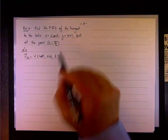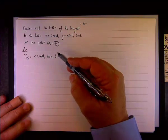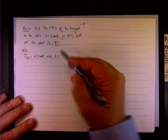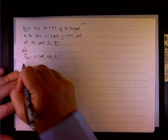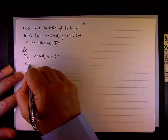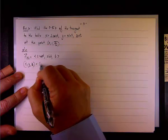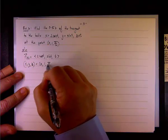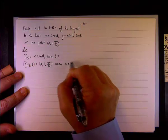We want to find a value of t when the point is 0, 1, and π over 2. So we want x equals 0, y equals 1, and z equals π over 2. The obvious value that gives us this is t equals π over 2.